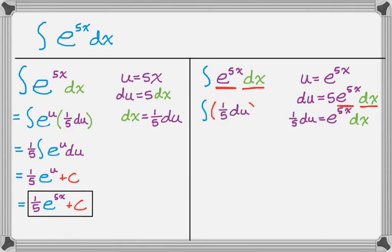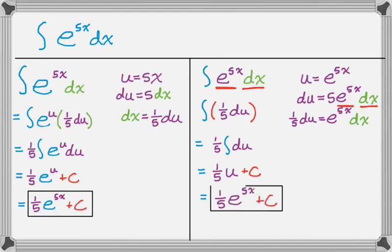And it's just going to get me 1 fifth du. So the integral of 1 fifth du, rearrange that, pulling out a constant, is 1 fifth the integral of du. The integral of du is just u. I've taken an anti-derivative, so I put a plus c. And then I want my final answer to be in terms of x. And u was actually e to the 5x. So I get 1 fifth e to the 5x and then plus c.